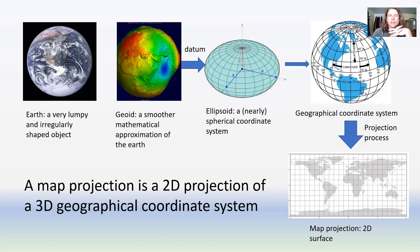A map projection is a two-dimensional projection of a three-dimensional geographic coordinate. Here you can see the full progression, starting with the Earth, smoothing it to the geoid, fitting an ellipsoid, referencing the locations on that ellipsoid with a geographic coordinate system, and then projecting that into 2D.